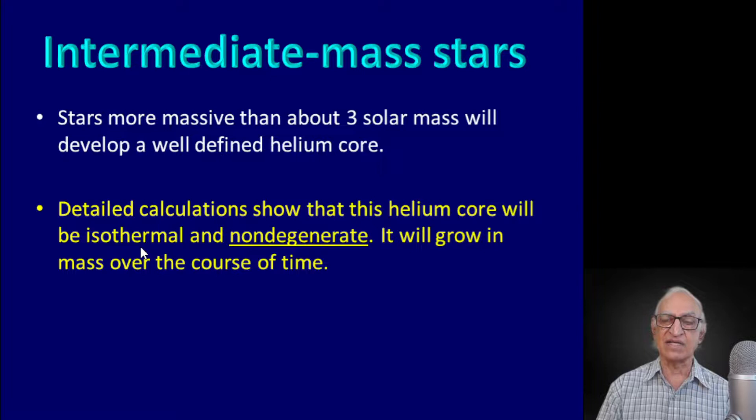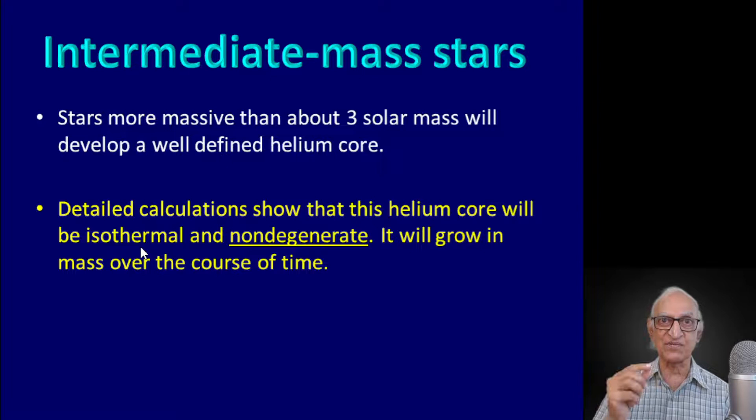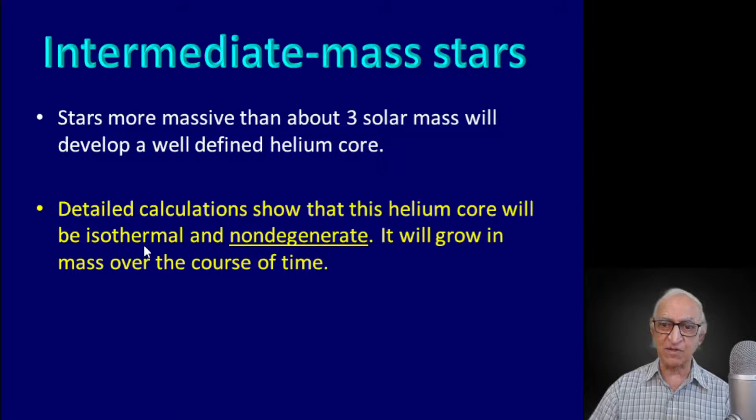Why will it be isothermal? Well, the core at that density will be highly conducting — highly conducting as far as heat is concerned. Take a metal, for example. A metal is a good conductor because there are a lot of free electrons; therefore a metal is isothermal. It is very difficult to establish a temperature gradient in a metal — very quickly it will become isothermal. Therefore it is perfectly reasonable to assert that the non-degenerate helium core will be isothermal.